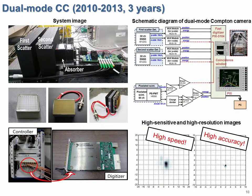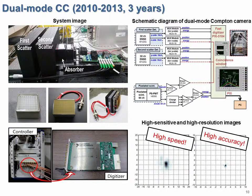Next is the dual-mode Compton imaging device, which has not only the high imaging resolution of the double-scattering Compton imaging device but also the high imaging sensitivity of a conventional Compton camera. We can quickly check whether radiation sources exist in a suspicious region using the high-sensitivity mode, and precisely estimate source positions using the high-resolution mode.